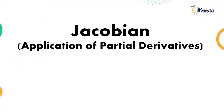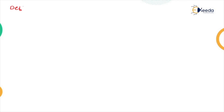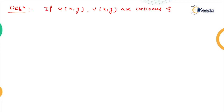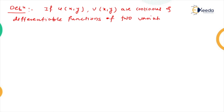Let me start with the definition of Jacobian. If u and v are continuous and differentiable functions of two variables x and y — note that Jacobian is named after a scientist, so the first letter J is written in capital.